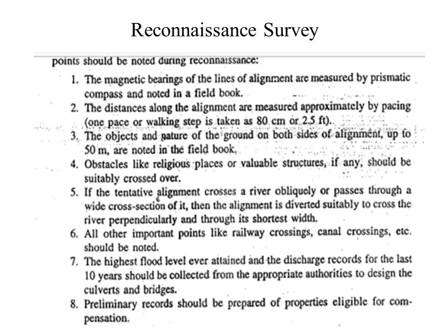The following points should be considered when doing the reconnaissance survey for the road project. The magnetic bearing of the line alignment are measured by prismatic compass and noted in a field book. Distances along the alignment are measured approximately by pacing. The objects and nature of ground on both sides of the alignment up to 50 meters are noted. Obstacles like religious places or valuable structures should be suitably crossed. If the tentative alignment crosses a river obliquely, it is diverted to cross perpendicularly through the shortest width. Important points like railway crossings, canal crossings, etc. should be noted. The highest flood level and discharge records for the last 10 years should be collected from appropriate authorities to design culverts and bridges. A preliminary record of properties eligible for compensation should be prepared.